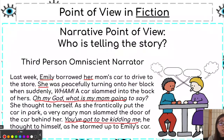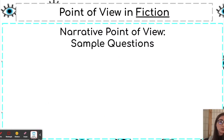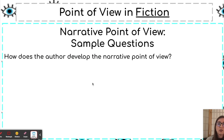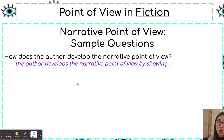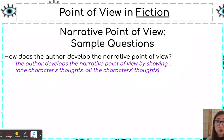Narrators and authors do this to give the reader a better understanding of multiple characters. Let's talk about some sample questions you might see. 'How does the author develop the narrative point of view?' Develop is another word for show. Our types are first person, third person limited, and third person omniscient. The author develops point of view by showing either one character's thoughts — if using first person or third person limited — or showing all characters' thoughts if using third person omniscient.